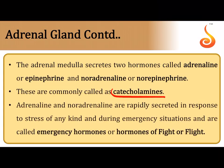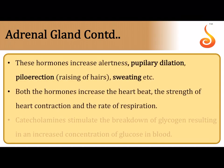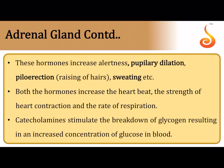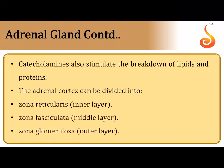The adrenal medulla releases hormones called catecholamines, which include adrenaline (epinephrine) and noradrenaline (norepinephrine). These are referred to as emergency hormones or hormones of fight, flight, or fright, released when the body faces an emergency situation. Key responses include pupillary dilation, raising of body hair, increased sweating, faster heart contraction and breathing rate, and breakdown of glycogen for energy. Catecholamines also stimulate the breakdown of lipids and proteins to provide additional energy during an emergency.